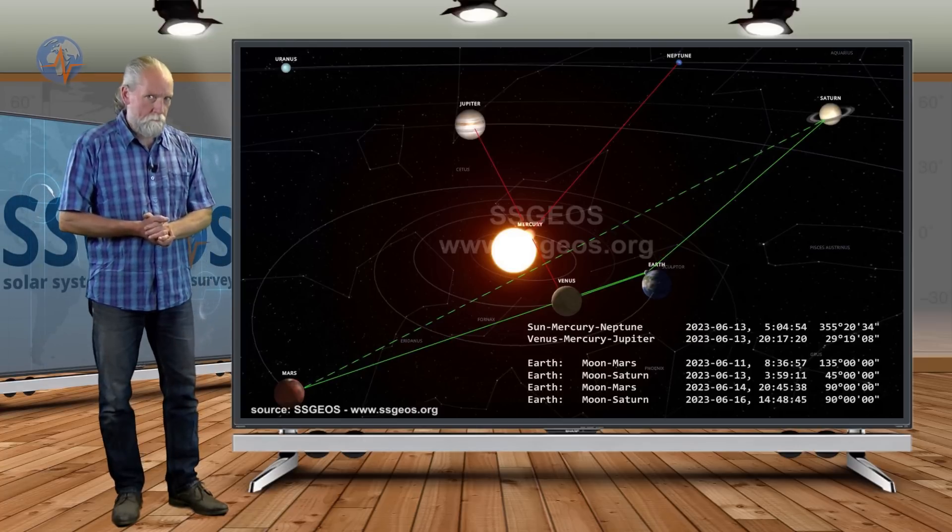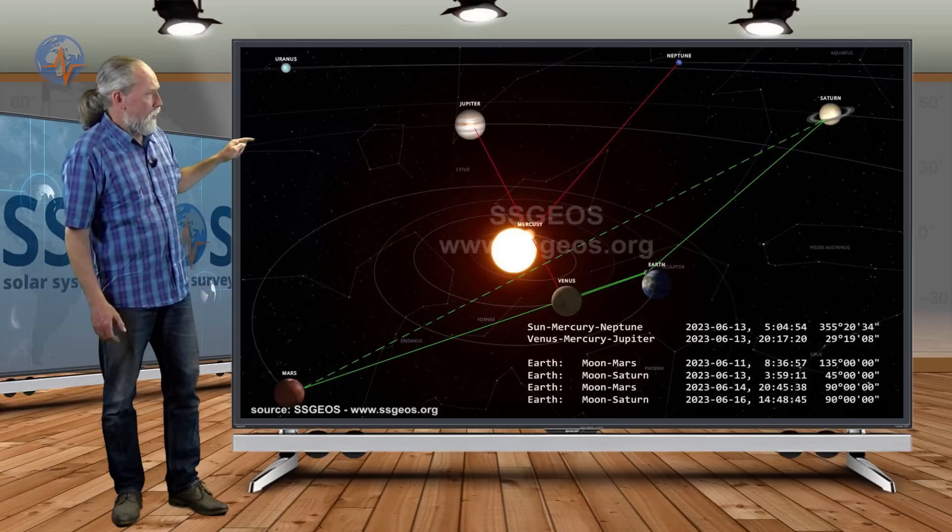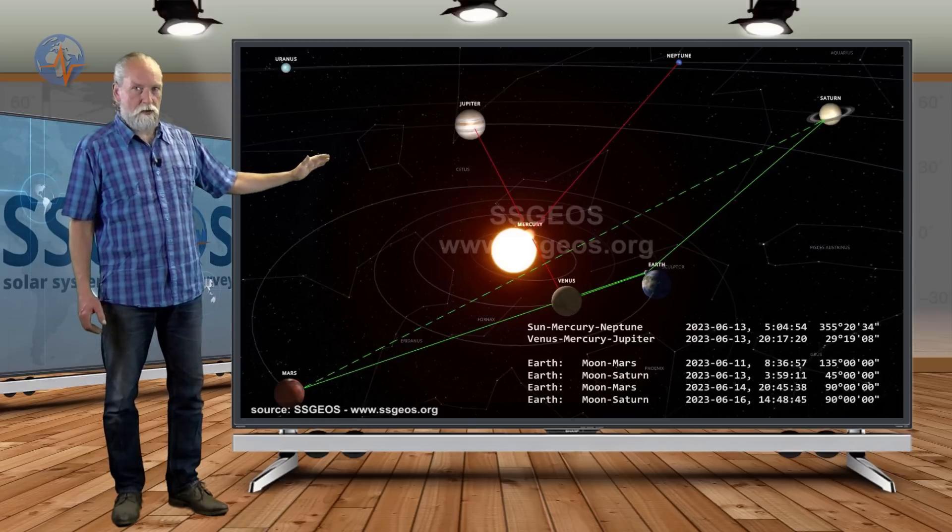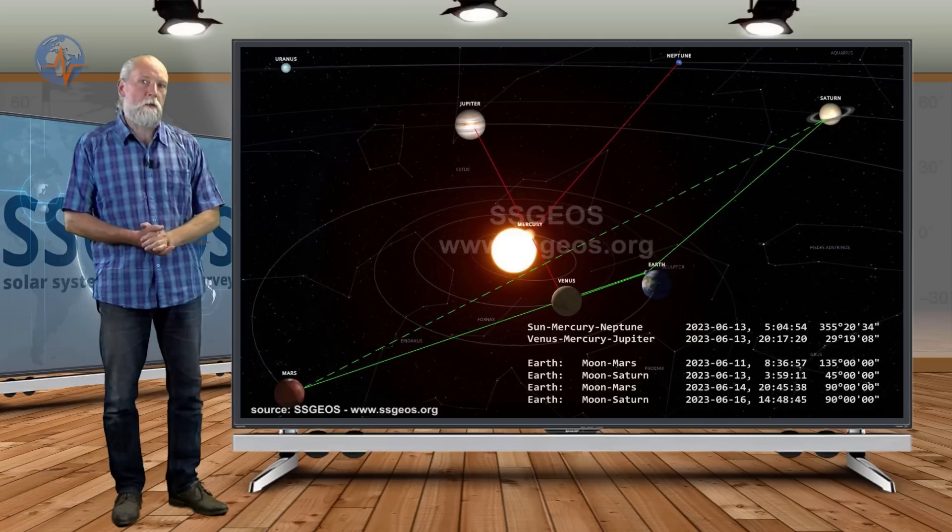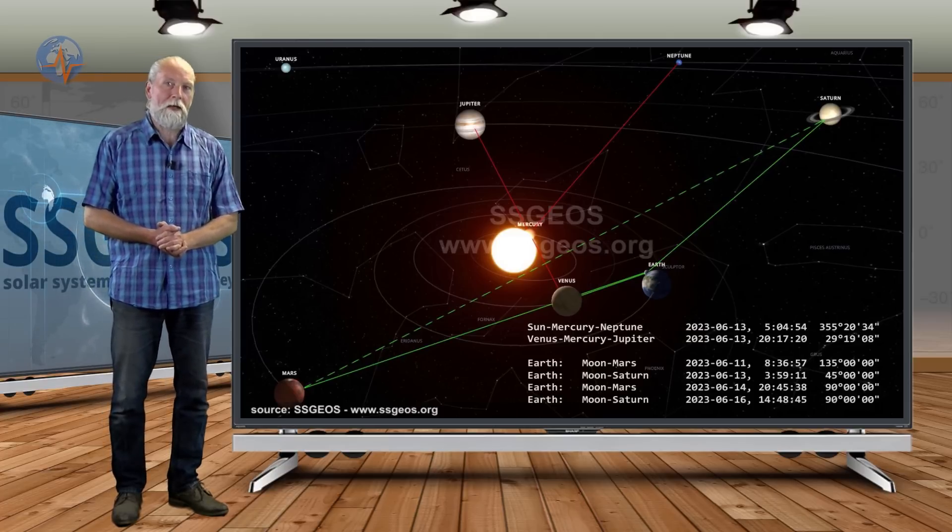I also would like to pay attention to the lunar geometry involving Mars and Saturn. That is going to play a major role in the coming weeks and months. Because the Moon is going to be making critical geometry to both outer planets.